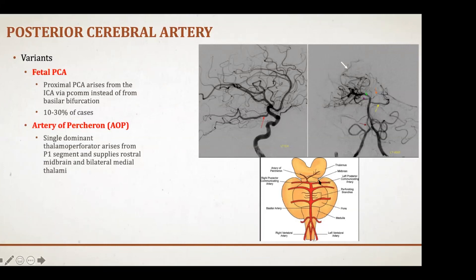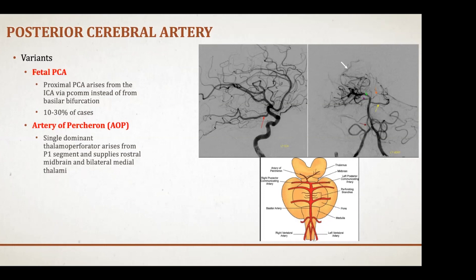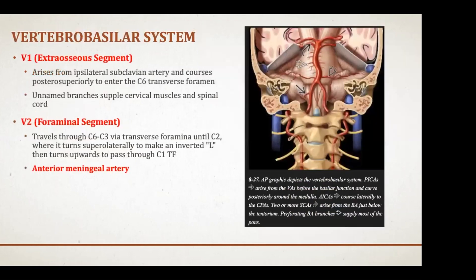The artery of Percheron is a variant that can be devastating. If this variant is occluded — as in a top-of-the-basilar stroke — bilateral thalami are knocked out. Because the reticular activating system depends on bilateral thalamic function, the patient will be in a coma. This is an important variant to recognize and a key board question for neurosurgery residents.